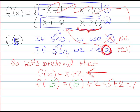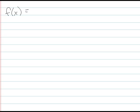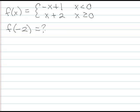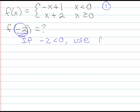Let's look at a different example using the exact same function: f of x equals negative x plus one when x is less than zero, and x plus two when x is greater than or equal to zero. Now we ask: what is f of negative two? The thing we care about is negative two. Is negative two less than zero? Yes.